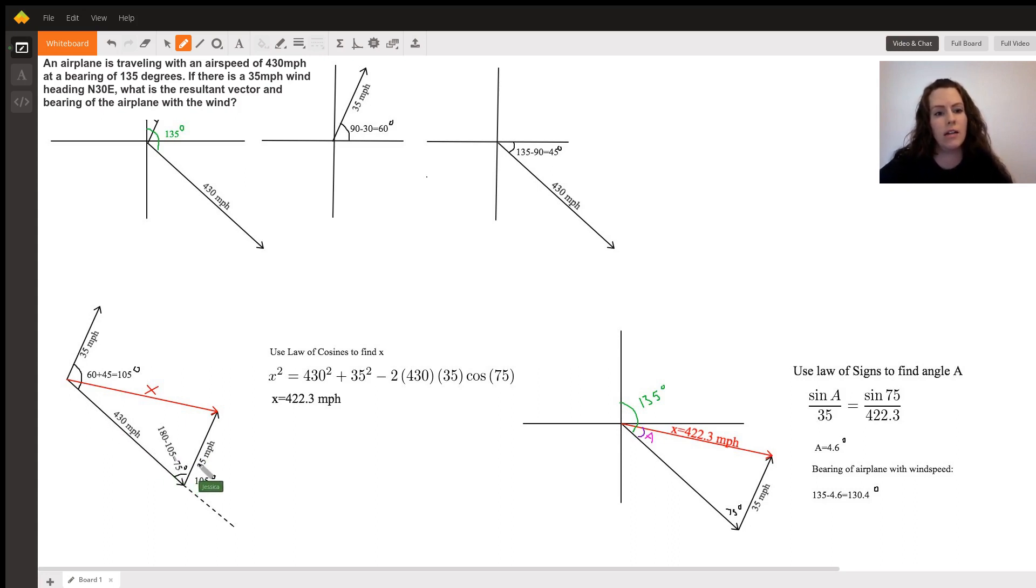you get the resultant vector, which is this red one here. And so we want to know this angle because it's going to help us to find that resultant vector.